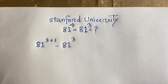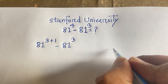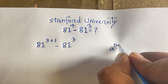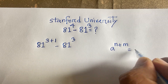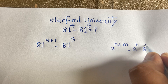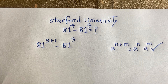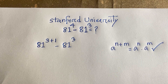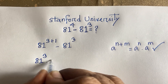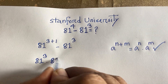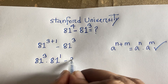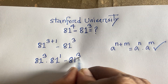Note the exponential law: a to the power (n + m) equals a to the power n times a to the power m. According to this law, 81 to the power (3+1) becomes 81 to the power 3 times 81 to the power 1, minus 81 to the power 3.